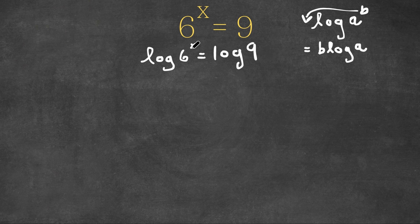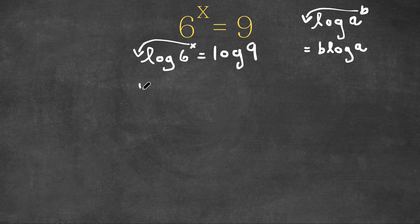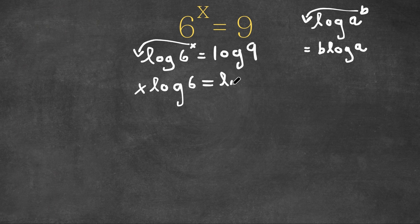So now I'm going to do the same exact thing to log 6 to the power of x. We can think of 6 as a and x as b, so I'm going to rewrite this by moving the x to the front of the logarithm. So now this would equal x times log 6 is equal to log 9.